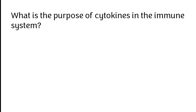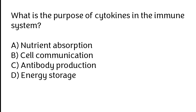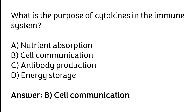What is the purpose of cytokines in the immune system? Neutron absorption, cell communication, antibody production, energy storage. The correct answer is option B. The purpose of cytokines in the immune system is cell communication.